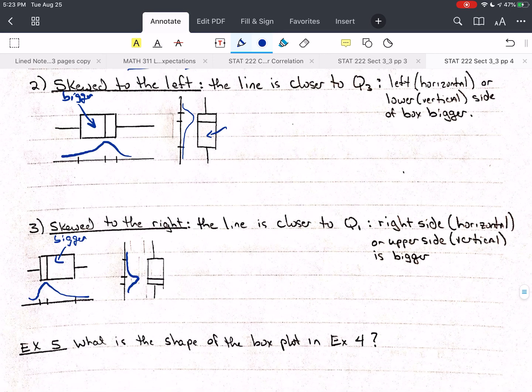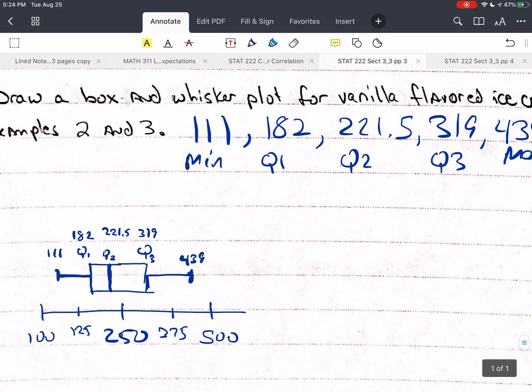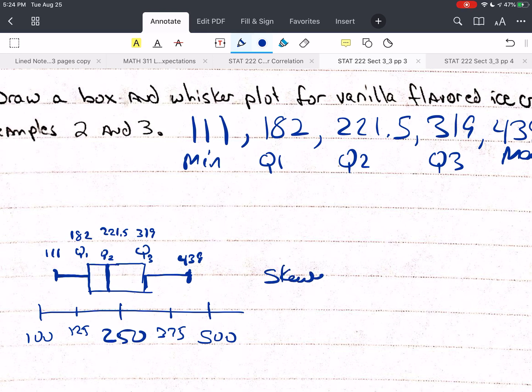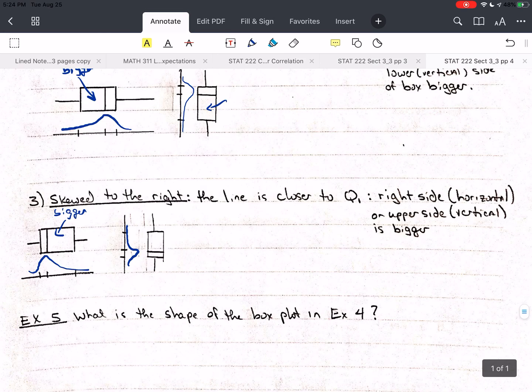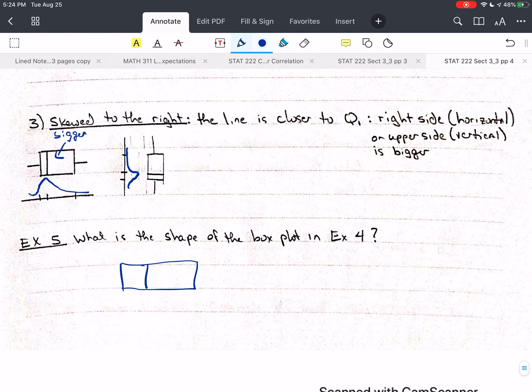What's the shape of the box that we did back in example four, just a minute ago? Well, let's look at that. It's going to be, the side that's bigger is the side to the right. So, this is skewed to the right. So, this is going to be, we had a box that looks something like that. And, so, it's going to be skewed to the right.